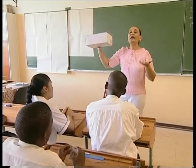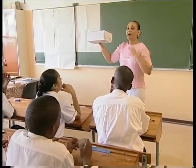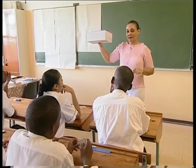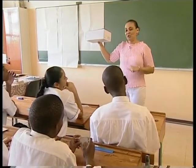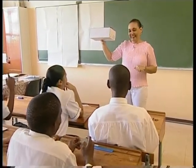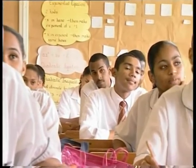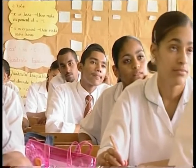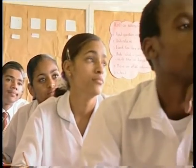A learner answers "because it has three dimensions," suggesting it has a top, a bottom, and a side. Although the learner is incorrect, the teacher acknowledges he is on the right track and proceeds to develop the concept further.